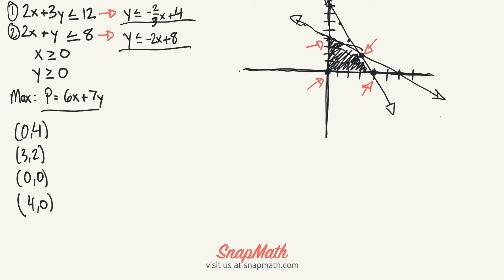The first one will be 6 times 0 plus 7 times 4, which gives us 28. The next one is 6 times 3 plus 7 times 2, which gives us 18 and 14, which is 32.